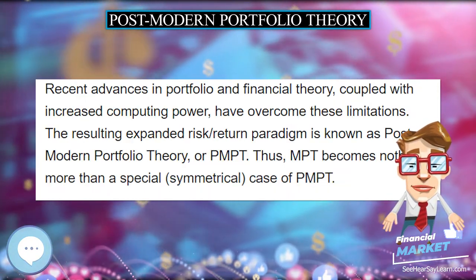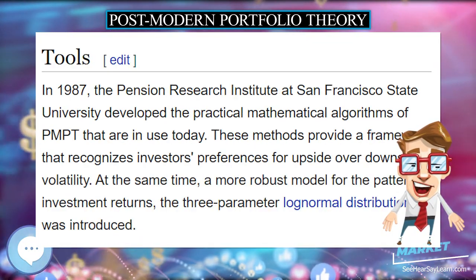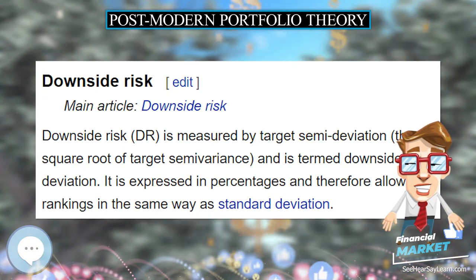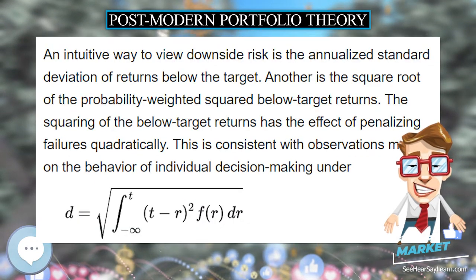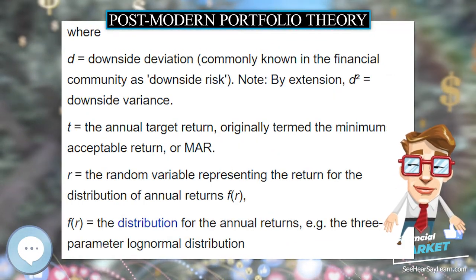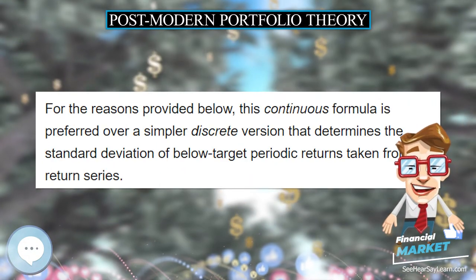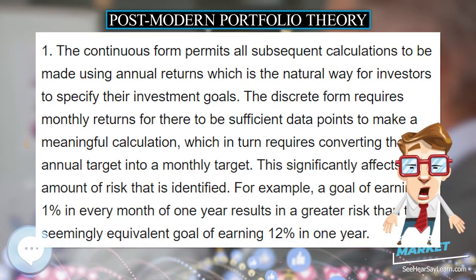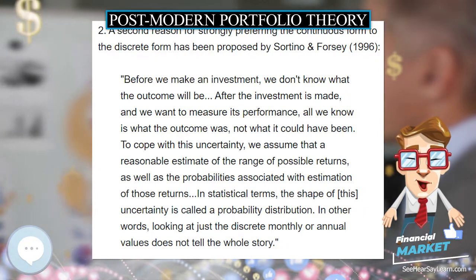The essential difference between PMPT and the Modern Portfolio Theory of Markowitz and Sharpe is that PMPT focuses on the return that must be earned on the assets in a portfolio in order to meet some future payout. This internal rate of return, IRR, is the link between assets and liabilities. PMPT measures risk and reward relative to this IRR, while MPT ignores this IRR and measures risk as dispersion about the mean or average return. The result is substantially different portfolio constructions.